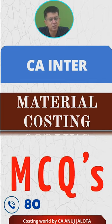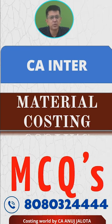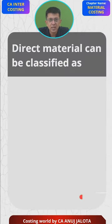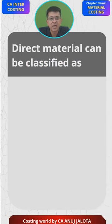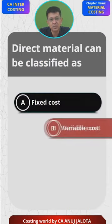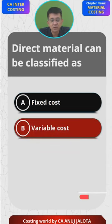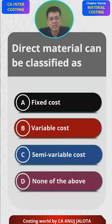You can always call us on 8080324444. Let's continue with today's MCQ. Direct material can be classified as: A) fixed cost, B) variable cost, C) semi-variable cost, and D) none of the above.